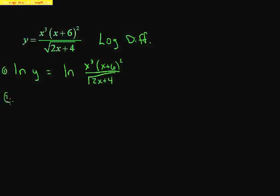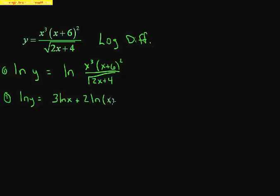Step two: expand the right side. In the numerator we have multiplication, which expands by addition, and then division expands by subtraction. Powers come down in front as coefficients. So we get: ln(y) = 3·ln(x) + 2·ln(x + 6) − (1/2)·ln(2x + 4).